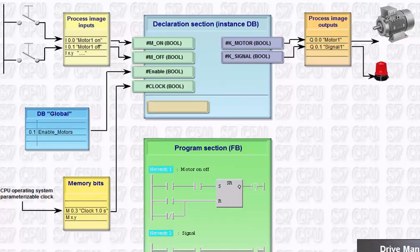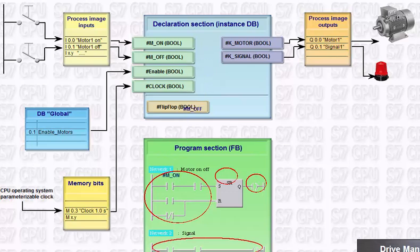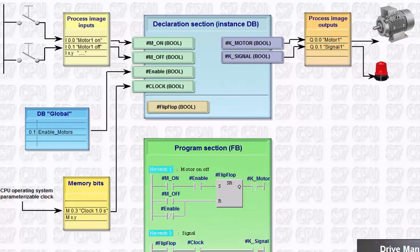The status of the storage element in the program must also be maintained after terminating the motor block. A static variable is therefore created in the declaration section of the FB. For an FB, all parameters, temporary and static variables are stored in the instance data block. The operands of the user program used in the block are exclusively switched via the symbolic name of the block parameter and static variables of the declaration section of this block.